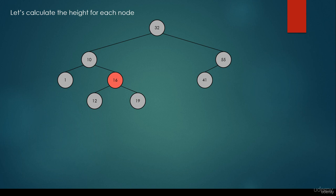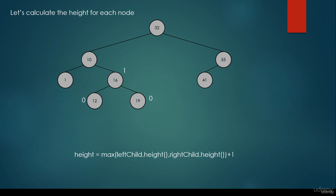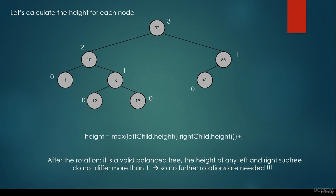After the right rotation it's going to be the new binary search tree. We have the 16, with the left child of 16 being the 12 and the right child of 16 being the 19. It is a valid binary tree again and in this case it is much more balanced. All the leaf nodes have height parameter 0, and using the recursive formula the node 16 is going to have height parameter 1. After the rotation it is a valid balanced tree — the heights of any left and right subtree do not differ more than 1, so no further rotations are needed.